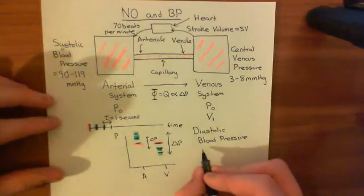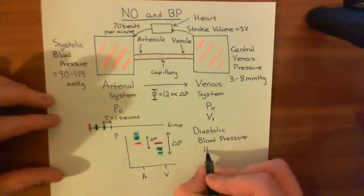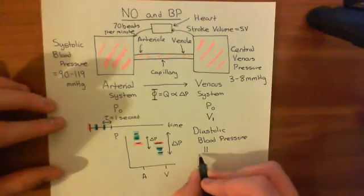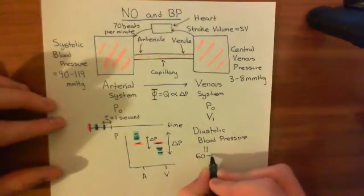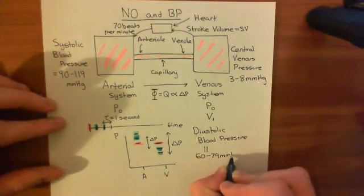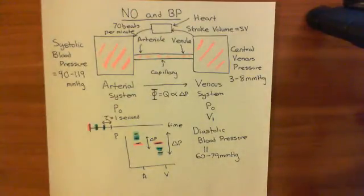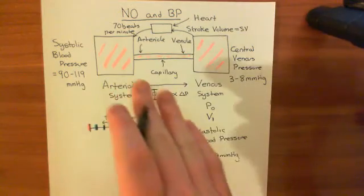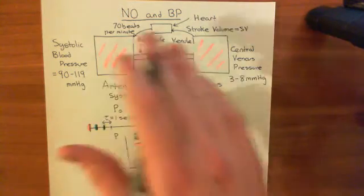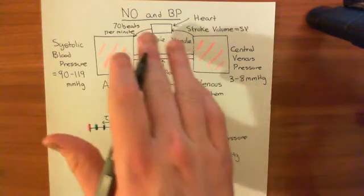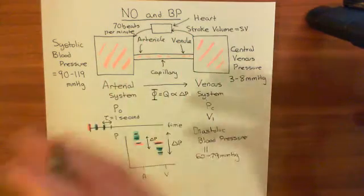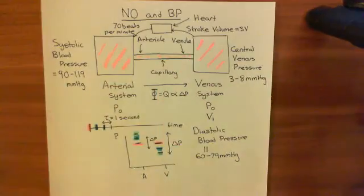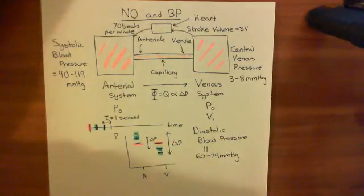Diastolic blood pressure — the lowest possible value within a cardiac cycle — is usually between 60 and 79 millimetres of mercury. Overall, this has been a brief reminder of the hemodynamic model: how the cardiovascular system works in equilibrium between blood being moved from the venous to the arterial system by the heart, and blood moving back via flow through the capillaries. In the next video, we'll talk about how nitric oxide regulates blood pressure.